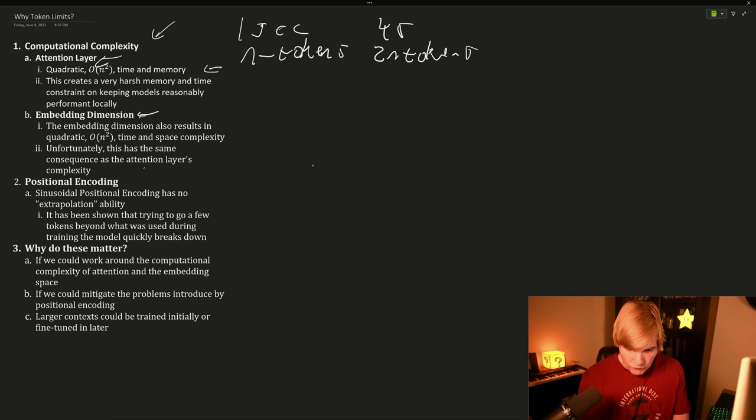But this grows very, very quickly. So if we want to do four N tokens, it will now take 16 seconds for those four N tokens. And this applies to our memory space as well.